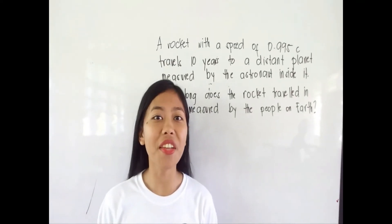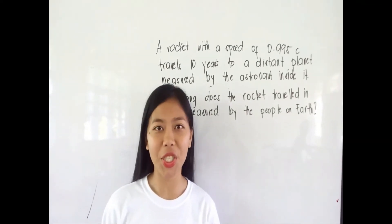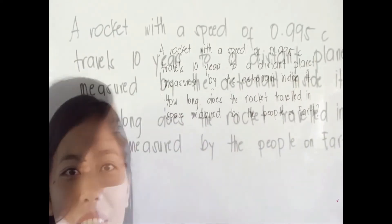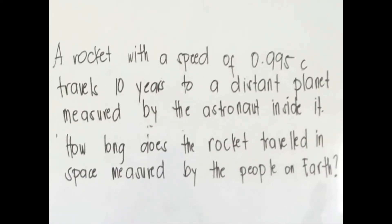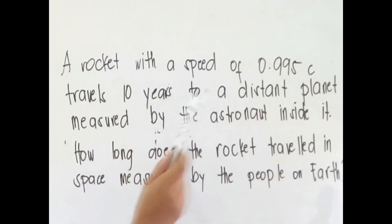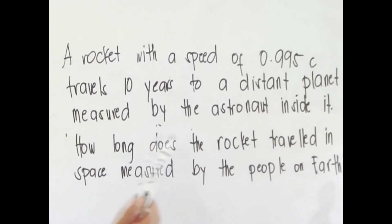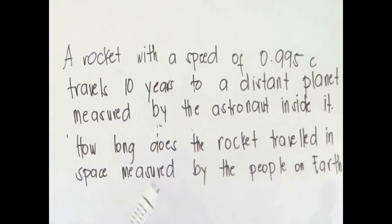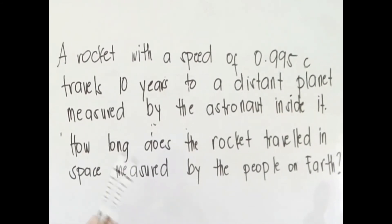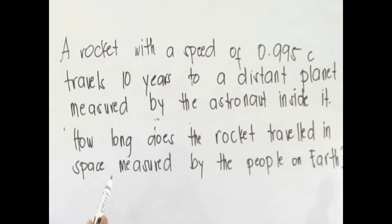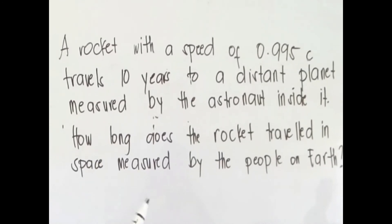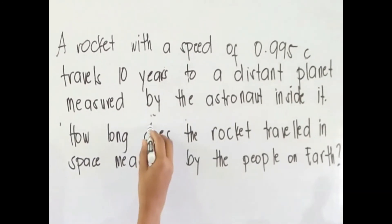So here is another example for time dilation. Let us solve it together. A rocket with a speed of 0.995c travels 10 years to a distant planet measured by the astronaut inside it. How long does the rocket travel in space measured by the people on Earth?